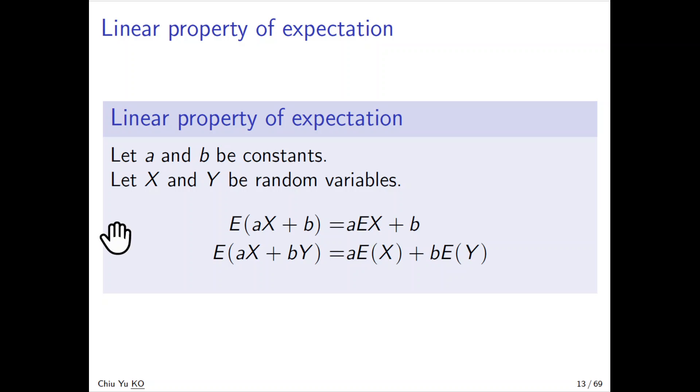The next one, we have E(aX + bY), so we can take the a out and take the b out. This means everything can be treated with a simple linear property.